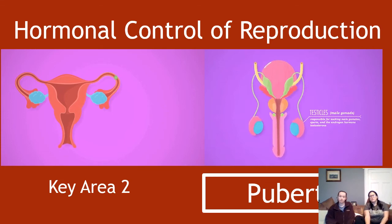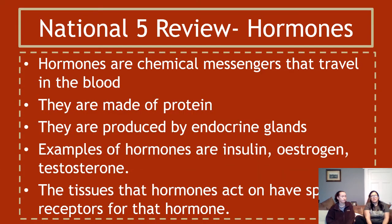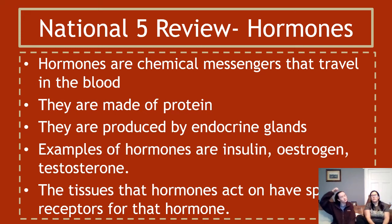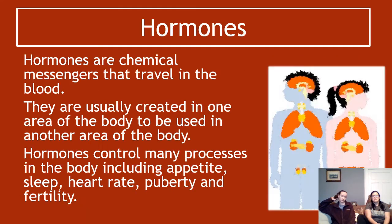Key area two is hormonal control of reproduction, and this section is all about puberty. Looking at the National 5 background you should know: hormones are chemical messengers that travel in the blood, they are made of protein, and they're produced by endocrine glands as part of the endocrine system. Examples include insulin, testosterone, and estrogen. The tissues that hormones act on have specific receptors that fit the shape of that hormone to allow the hormone's signal to take effect.